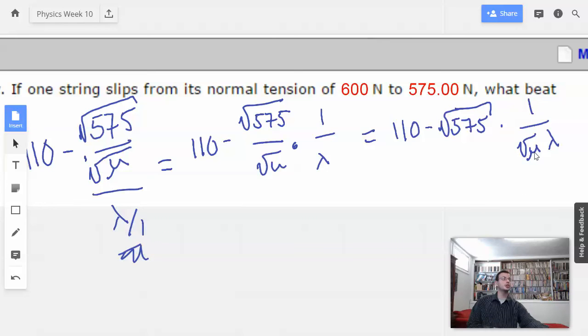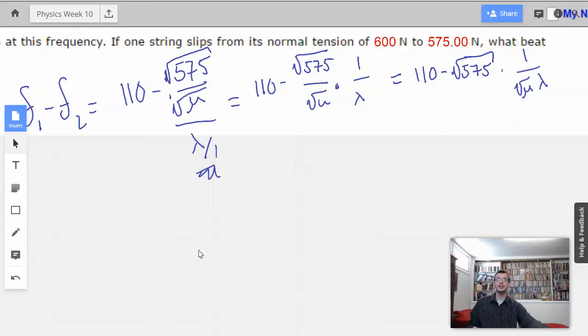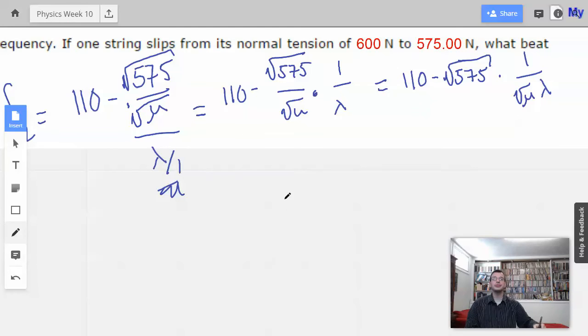So I don't know square root of mu or lambda. So I just kind of put those guys to the side. Now I'm going to try and figure those guys out.